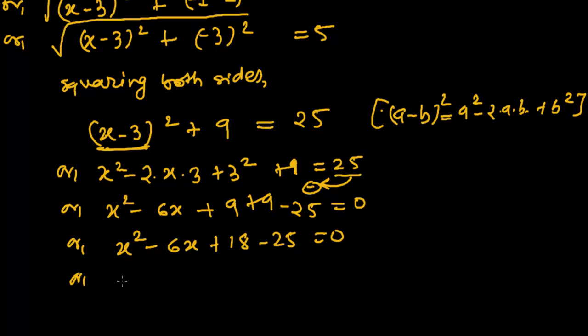Again, I am just doing it a long way, a bit longer, that you can understand easily. Now plus 18 and minus 25, how much it is? It's minus 7 exactly, equals to 0. Now see, what do we have to do? So we have to find such two numbers that when we multiply, then we will be getting minus 7. But when we will add, it will be minus 6.